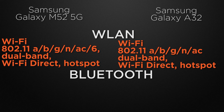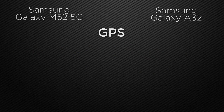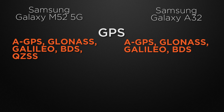About the Bluetooth version, both the M52 and A32 have Bluetooth 5.0, so it's a tie. Let's talk about positioning chips — the M52 has A-GPS, GLONASS, Galileo, BDS, and QZSS, whereas the A32 has A-GPS, GLONASS, Galileo, and BDS. The winner here is the M52 because it additionally supports QZSS.